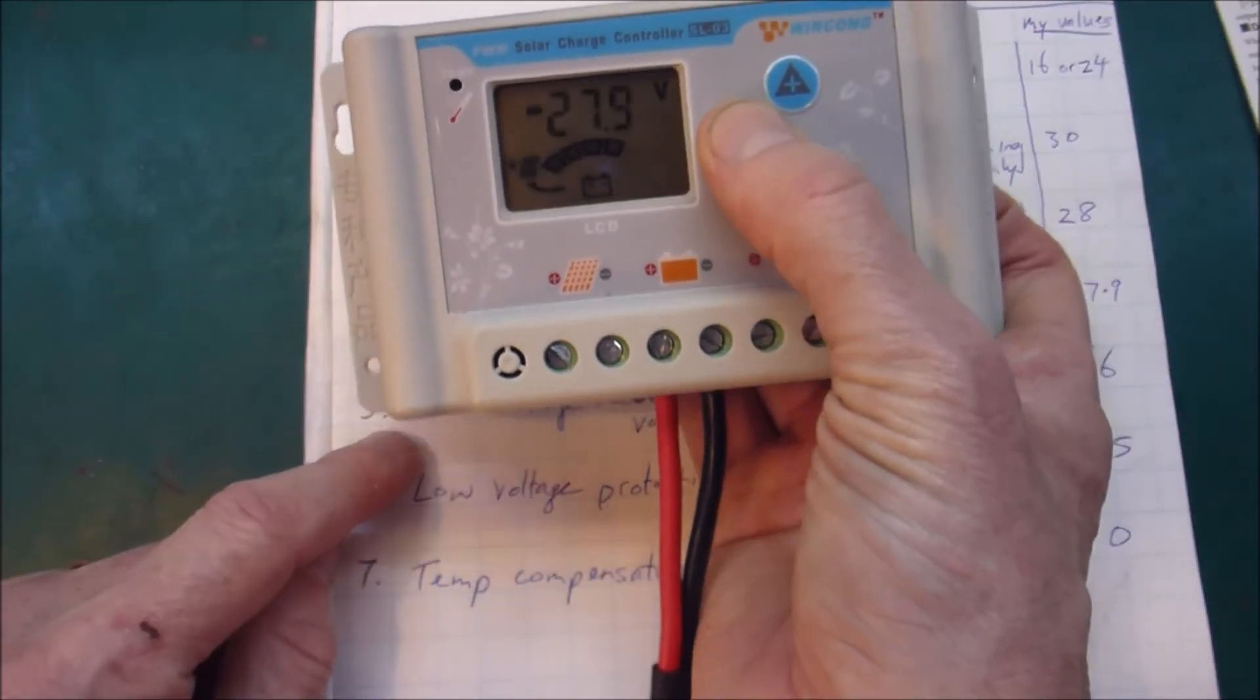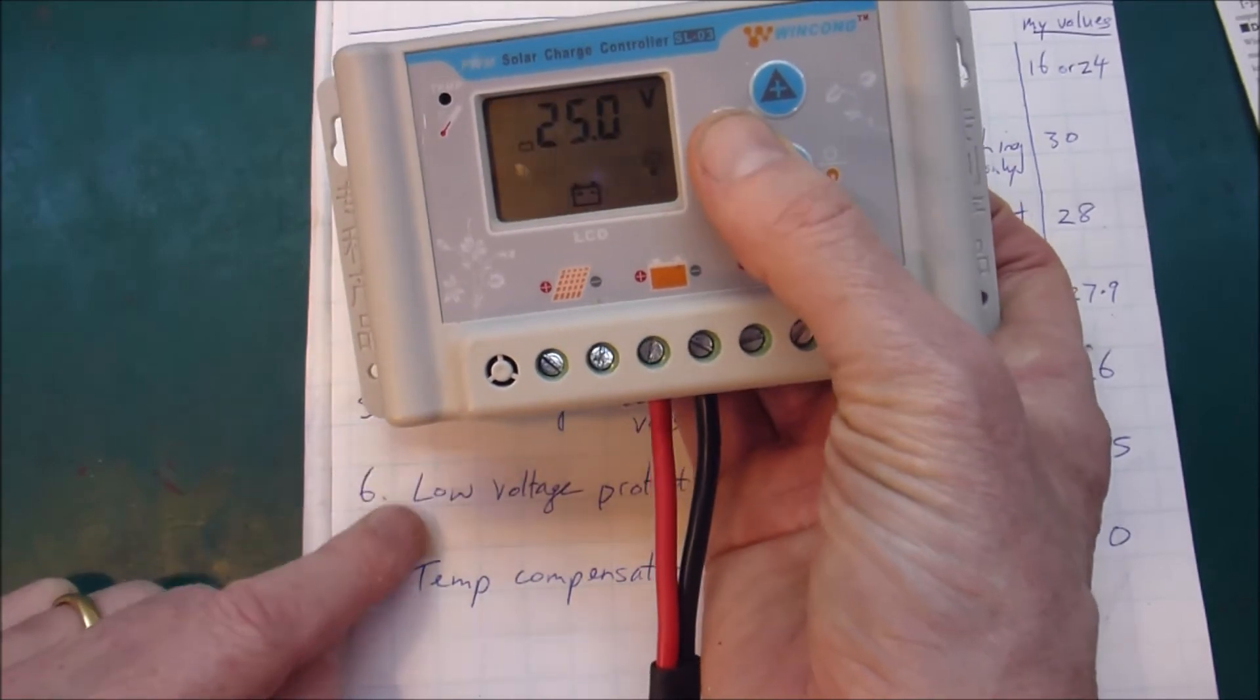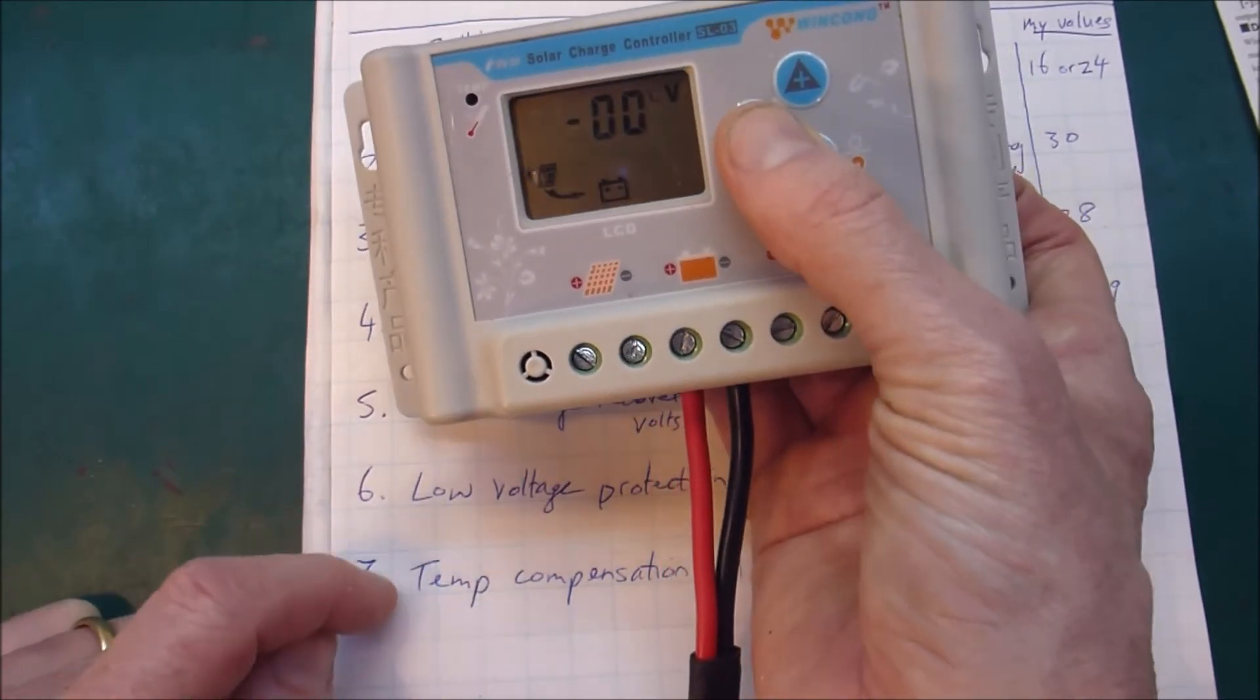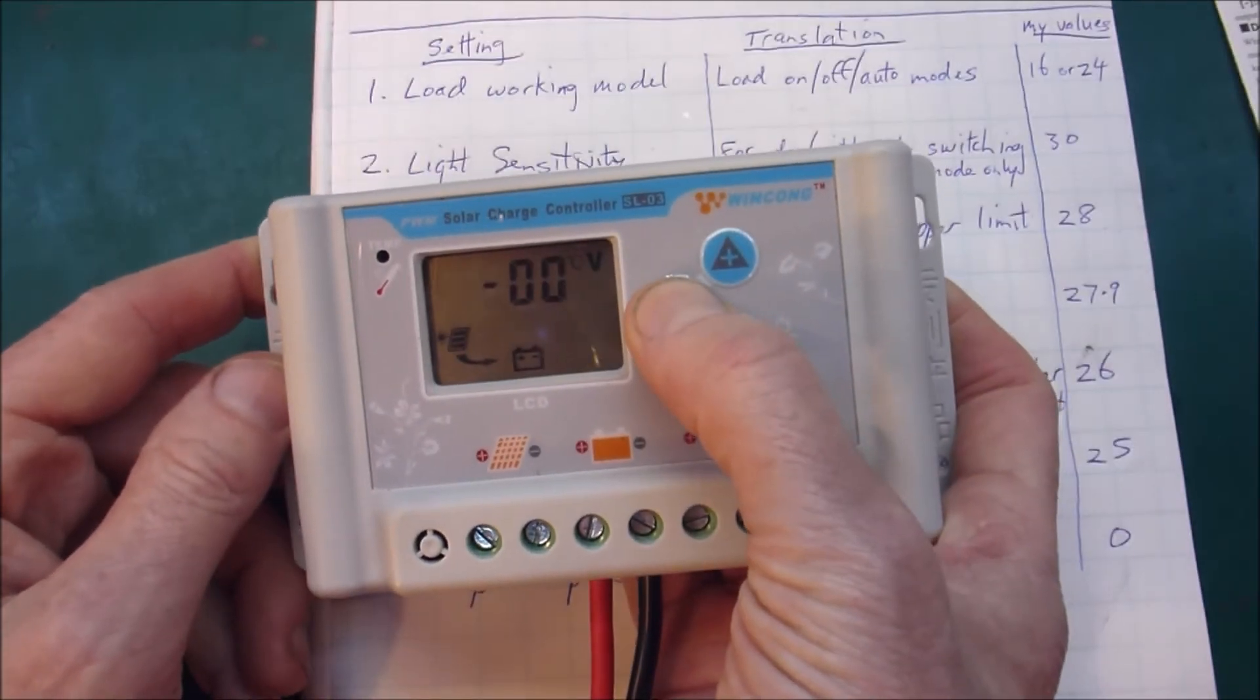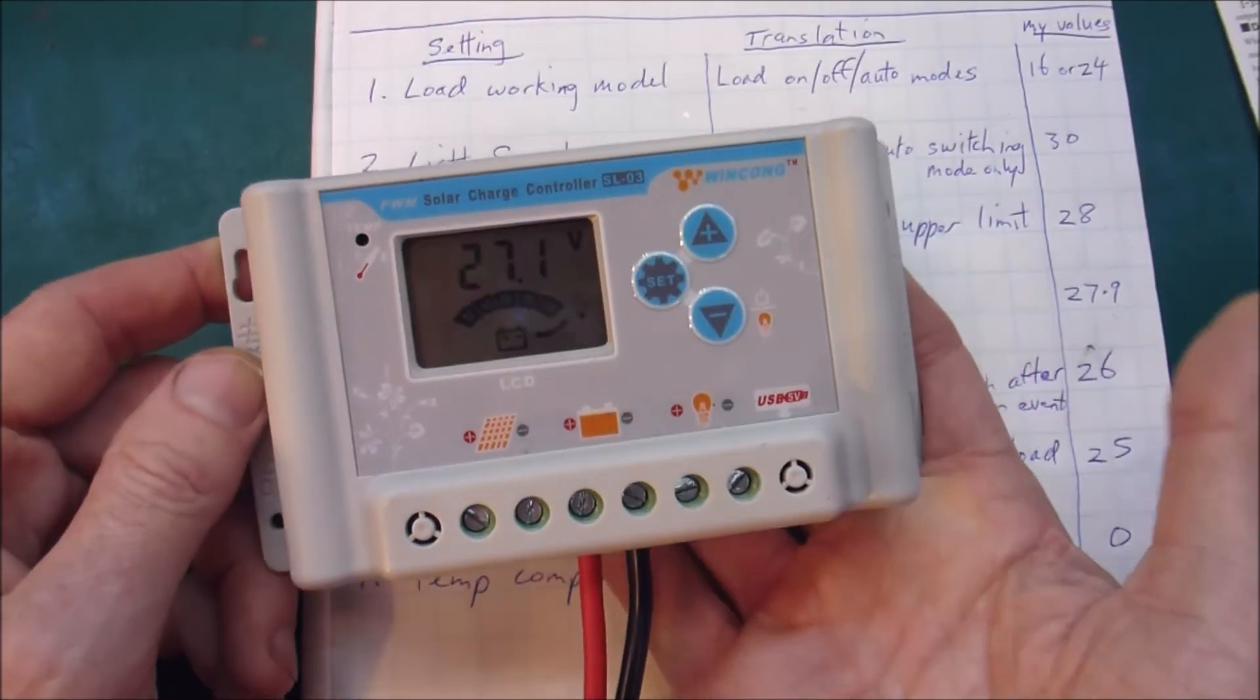Then over discharge 26, the low voltage protection 25, and temperature compensation 0. And then you just hold the button down and hey presto you're done.